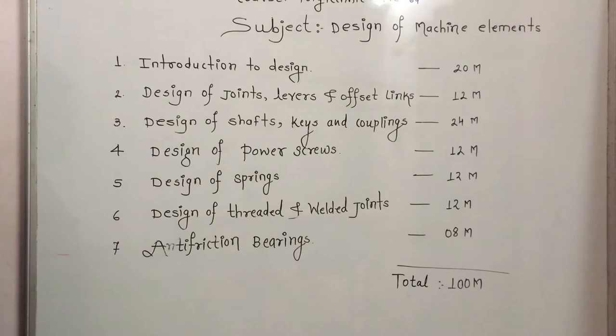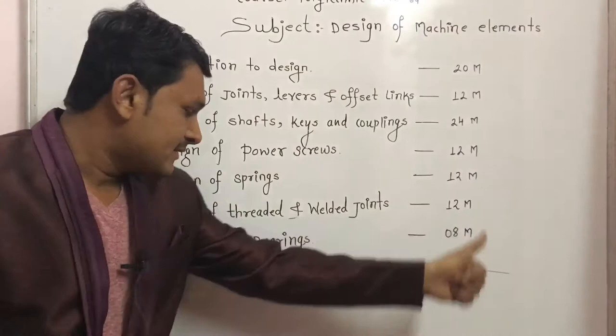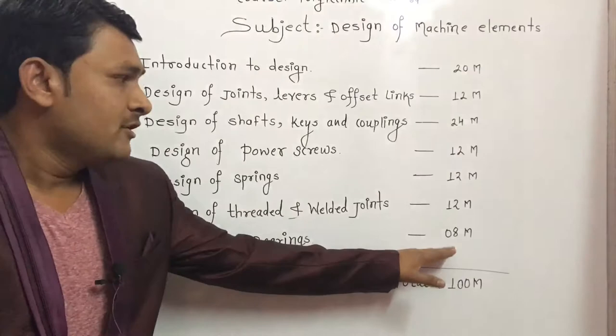Next chapter is Design of Springs, given for 12 marks. Next chapter is Design of Threaded and Welded Joints, given for 12 marks. And the last chapter is Anti-Friction Bearings, given for 8 marks.